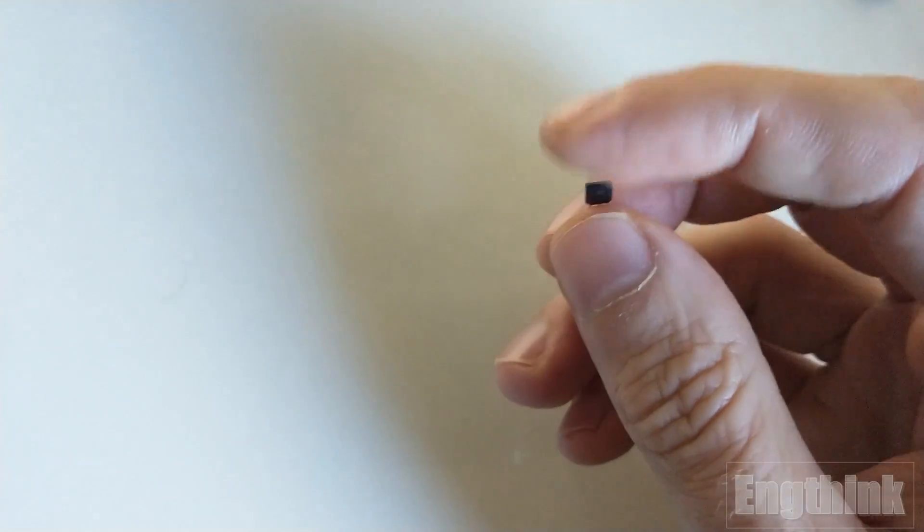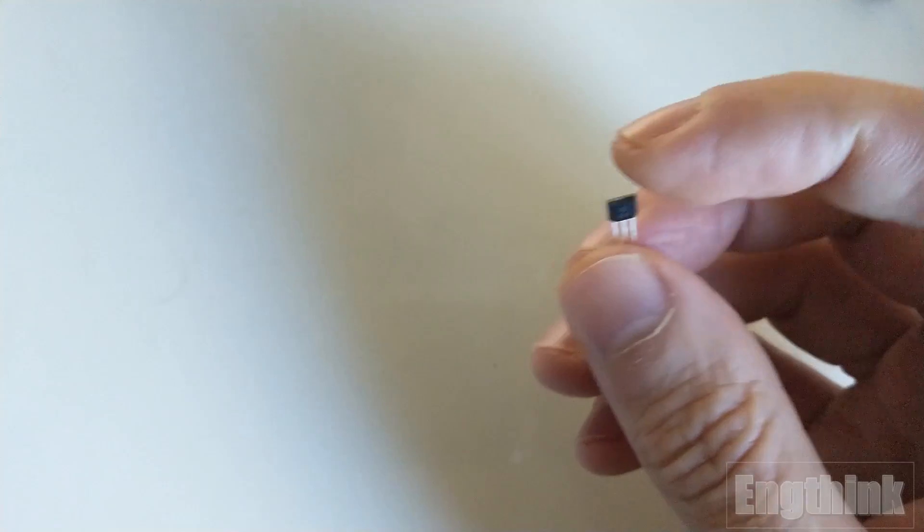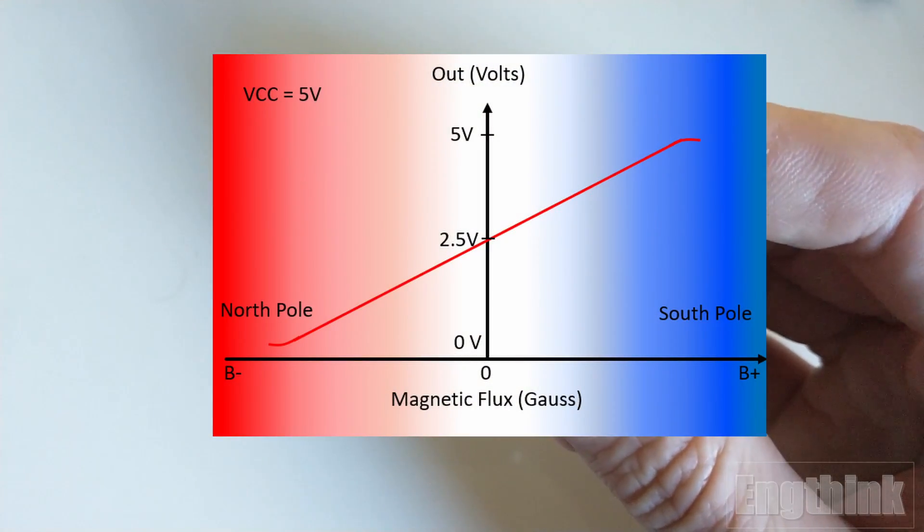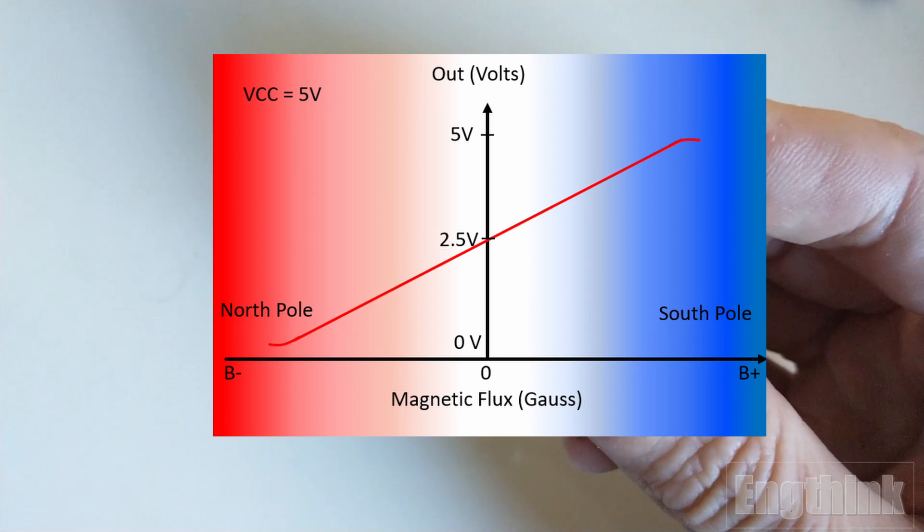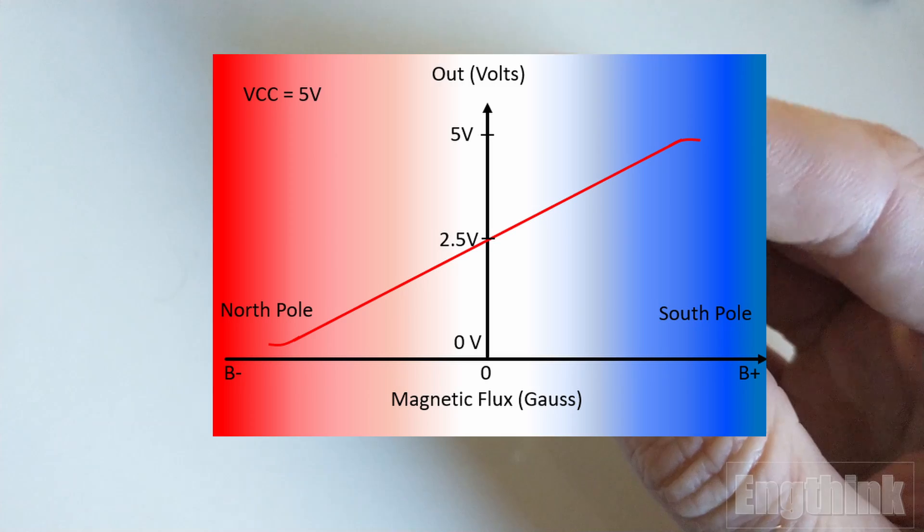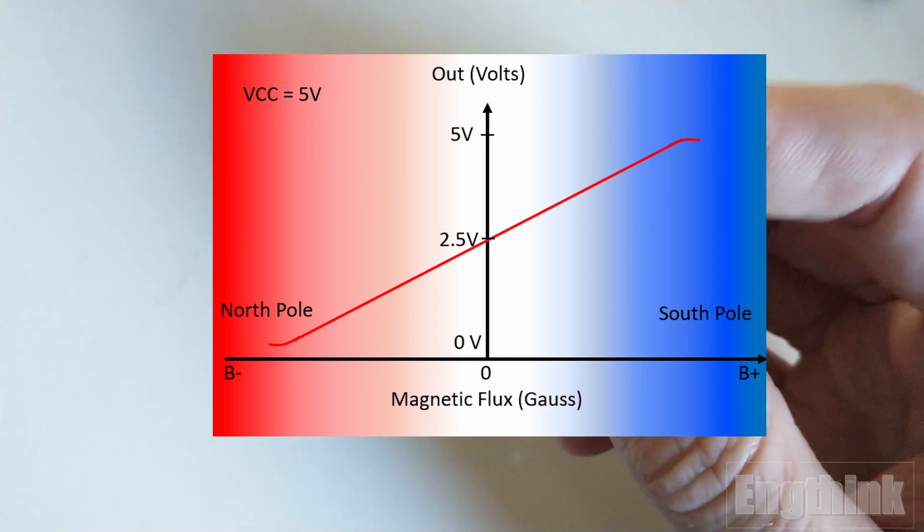On the other hand, we have the linear Hall effect sensor. This type of sensor can generate an analog signal at the output, so there are many values that can appear in the output within a specific range of voltage.